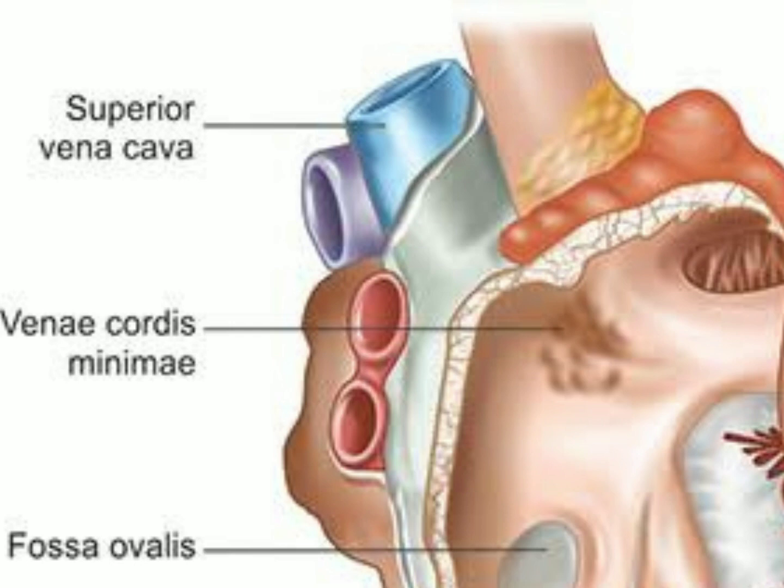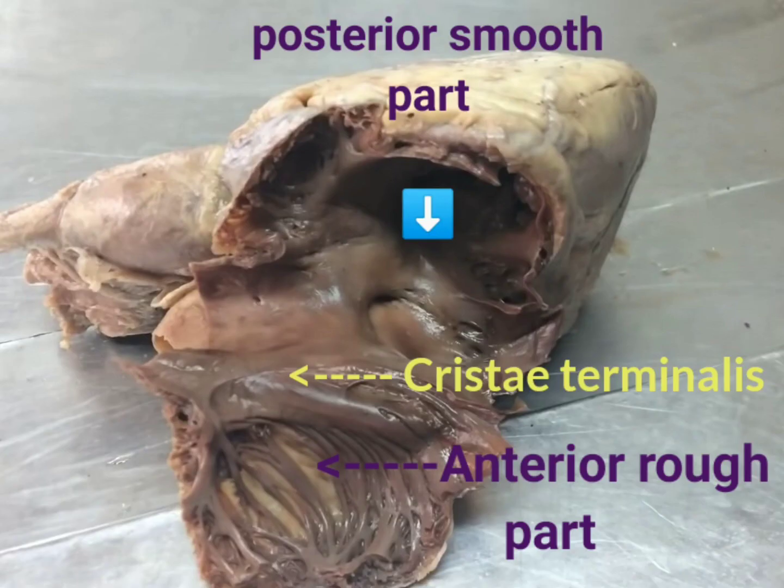The anterior cardiac vein drains blood from the infundibulum of the ventricle. The venae cordis minimae drain blood from all four chambers of the heart and drain into all four chambers of the heart. The right atrium is separated from the left atrium internally by a septum called the interatrial septum.